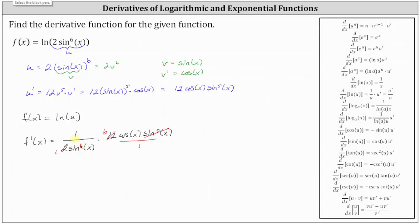Giving us f prime of x equals 6 cosine x divided by 1 factor of sine x. And then finally, cosine x divided by sine x simplifies to cotangent x. f prime of x is equal to 6 cotangent x.